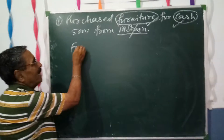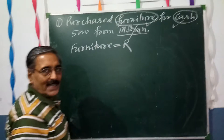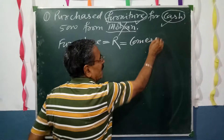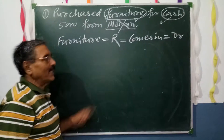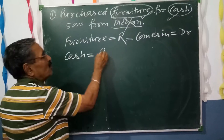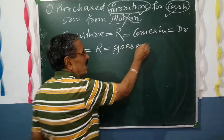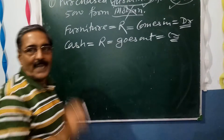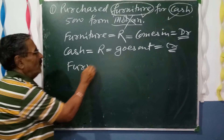Furniture belongs to real account — we can see and touch it. When we are purchasing it, it comes to us, so it will be debited (debit what comes in — real account's rule). The second item is cash, which also belongs to real account. We have given cash, so cash goes out — it will be credited.